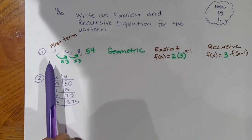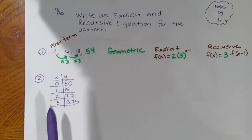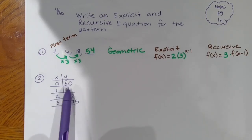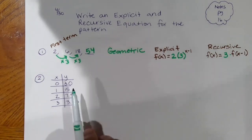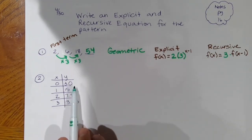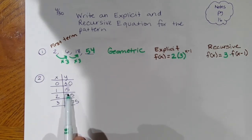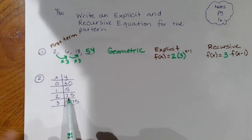For the next problem, it's still a pattern but written in a table format. Go ahead and copy this: x and y values are 0→30, 1→15, 2→7.5, 3→3.75. You want to see how the pattern is growing. Try subtracting 15 — no, you're not subtracting, but it is going down.